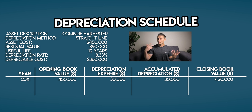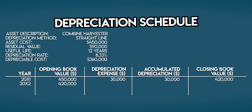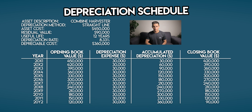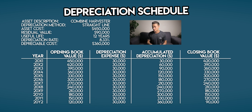With year 1 out of the way, we just need to repeat the process over and over again for the next 11 years. Your closing book value in year 1 becomes your opening book value in year 2. Your depreciation expense is fixed because we're using the straight line method, so it's $30,000. Accumulated depreciation is $60,000 and your closing book value is $420,000 minus $30,000, which is $390,000. After 12 years, the closing book value of your combine harvester is $90,000, which matches the residual value we chose earlier — meaning we haven't made any mistakes.